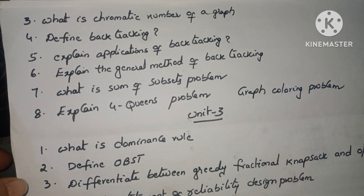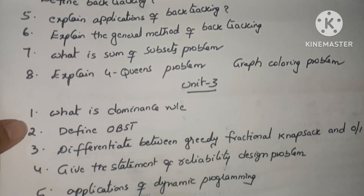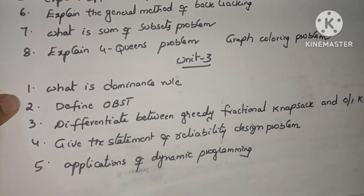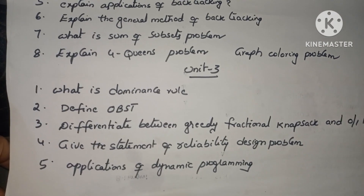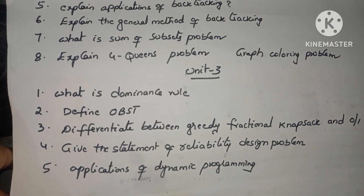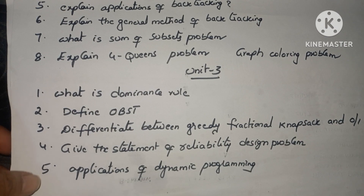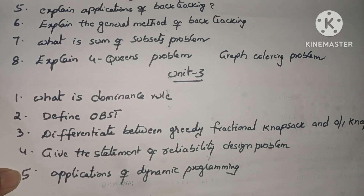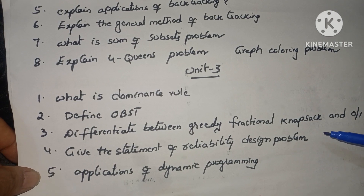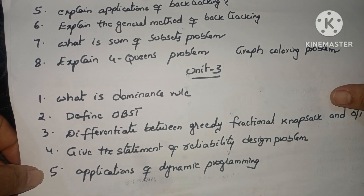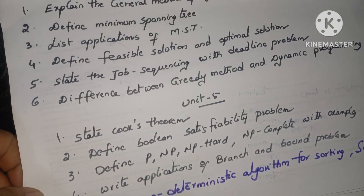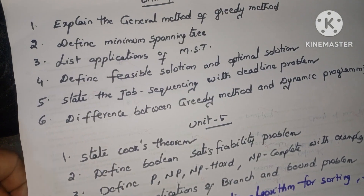Unit three questions: What is a dominance rule? Define OBST. Differentiate between greedy fractional knapsack and 0/1 knapsack problem. Give the statement of the reliability design problem. And explain the applications of dynamic programming.